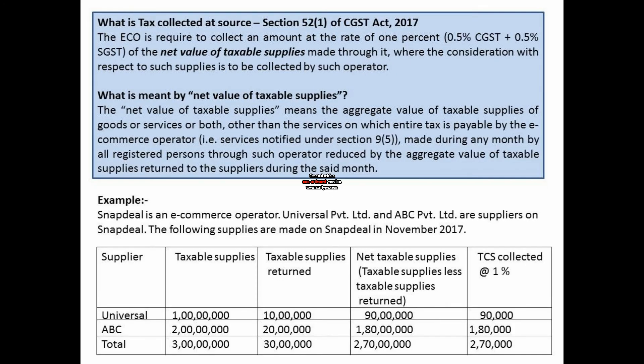What is TCS? The ECO deducts an amount equal to 1% of the net value of taxable supply made through it. Net value of taxable supply means taxable supplies less taxable supplies returned. For example, Snapdeal is an ECO and Universal Private Limited and ABC Private Limited are two suppliers on Snapdeal. Taxable supply made by Universal and ABC is Rs. 1 crore and Rs. 2 crore respectively. Taxable supplies returned by customers are Rs. 10 lakh and Rs. 20 lakh. Net taxable supplies are Rs. 90 lakh and Rs. 1 crore 80 lakh, totalling Rs. 2 crore 70 lakh.